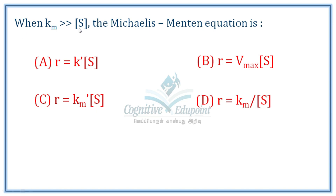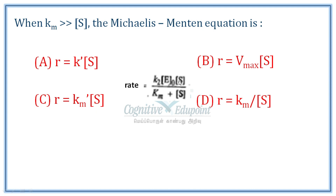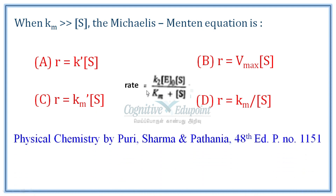Next question: when Km is far greater than the substrate concentration, what does the Michaelis-Menten equation reduce to? The Michaelis-Menten equation is: rate = K2 × [E] × [S] / (Km + [S]). When Km >> [S], the substrate concentration term in the denominator becomes negligible. Since K2, enzyme concentration [E], and Km are all constants, the rate becomes equal to K2 × [E] / Km, an apparent constant. Thus the rate will be independent of substrate concentration.